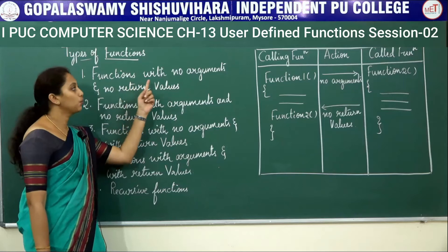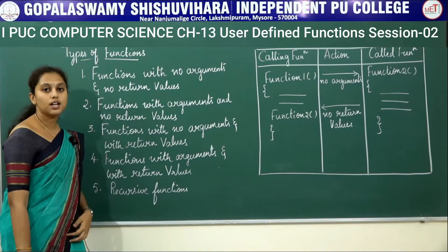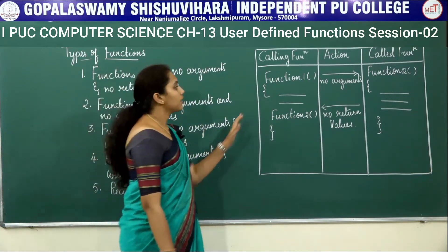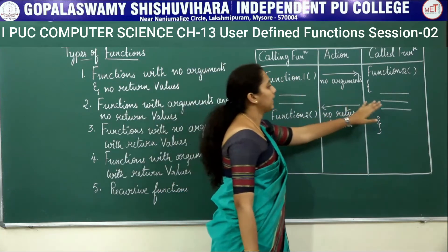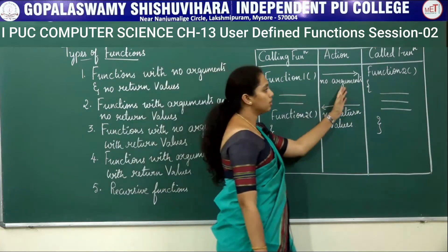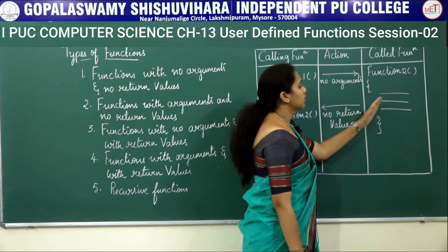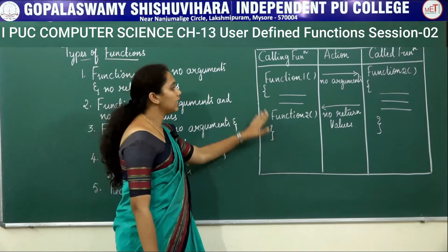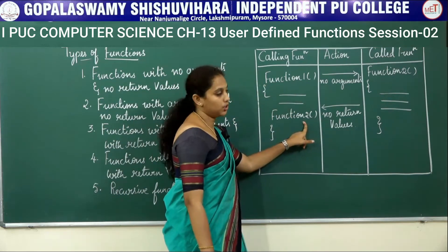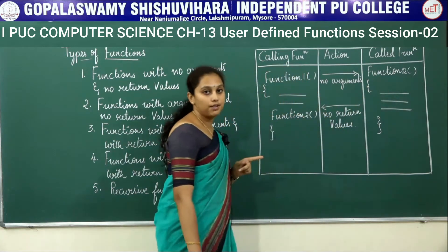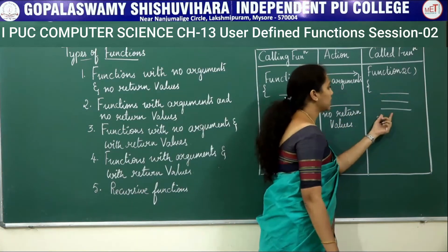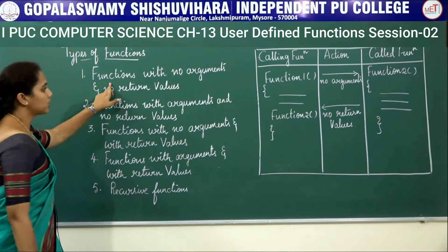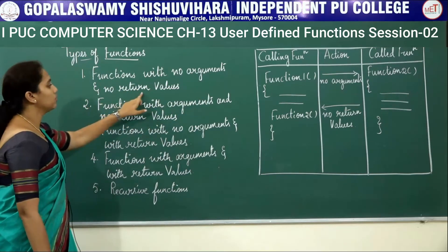The first type is functions with no arguments and no return values. In this type, the first function calls the second function. As we are not passing any arguments to the second function, the second function performs its calculations but does not return any value to the first function. That is called functions with no arguments and no return values.